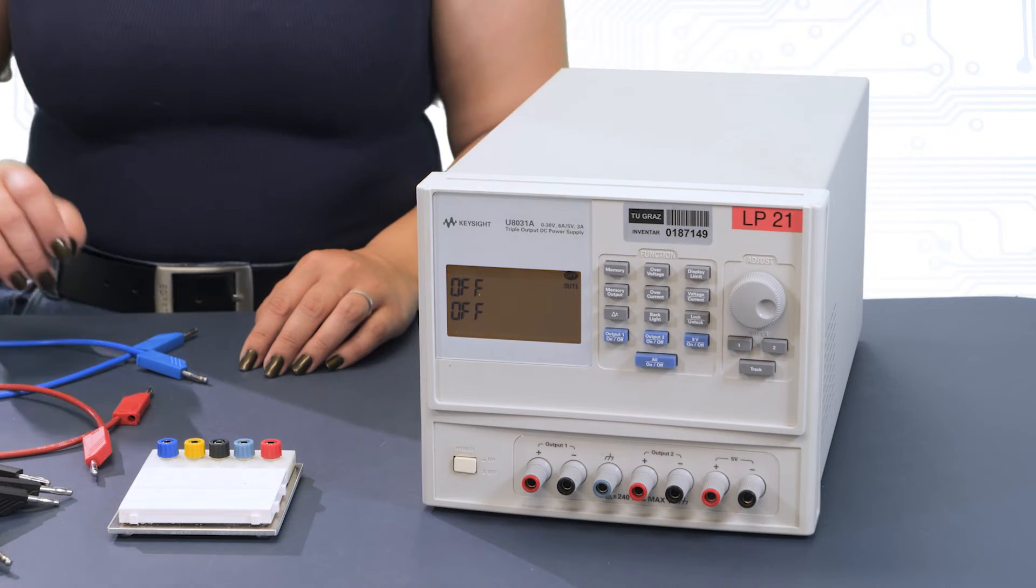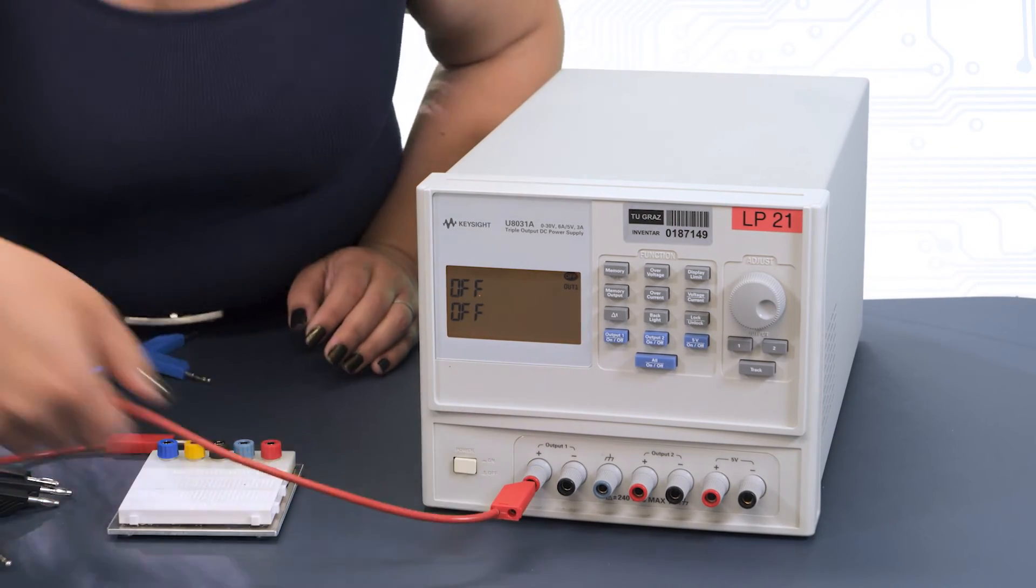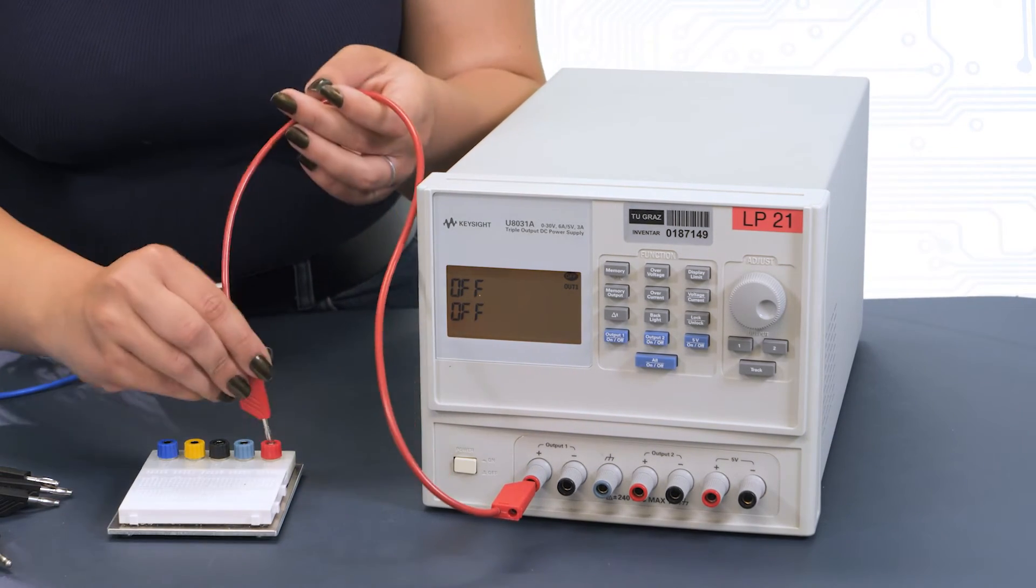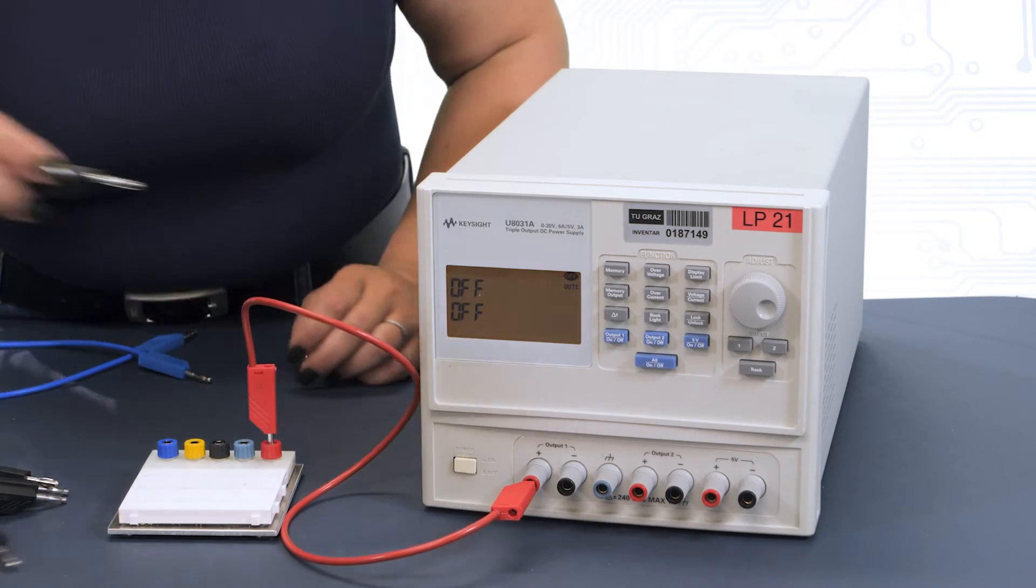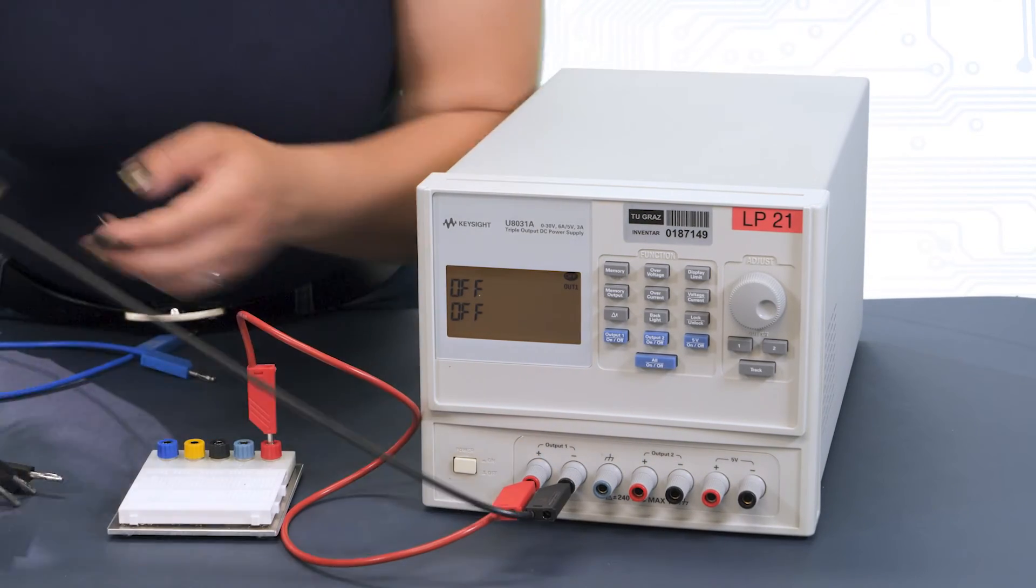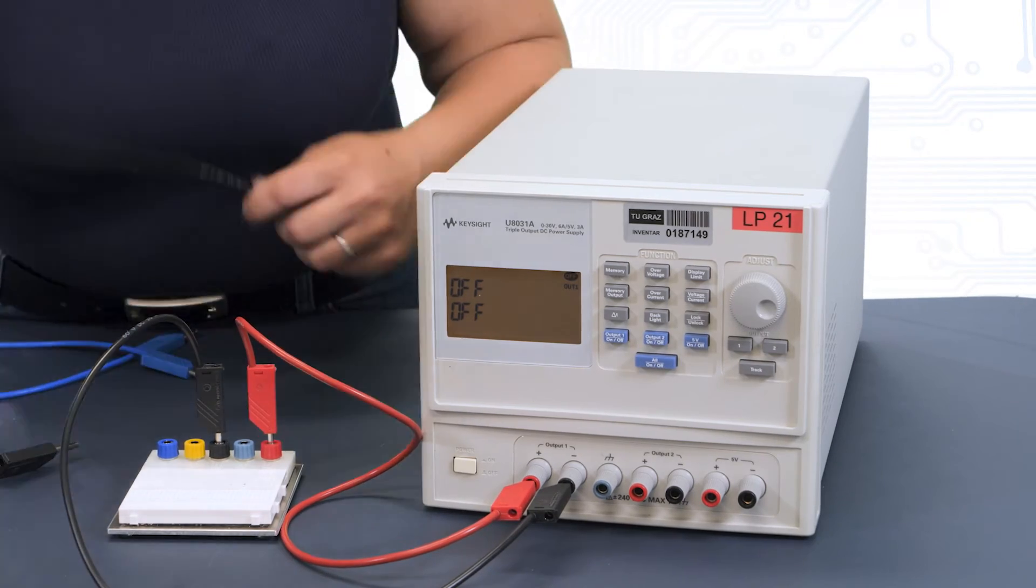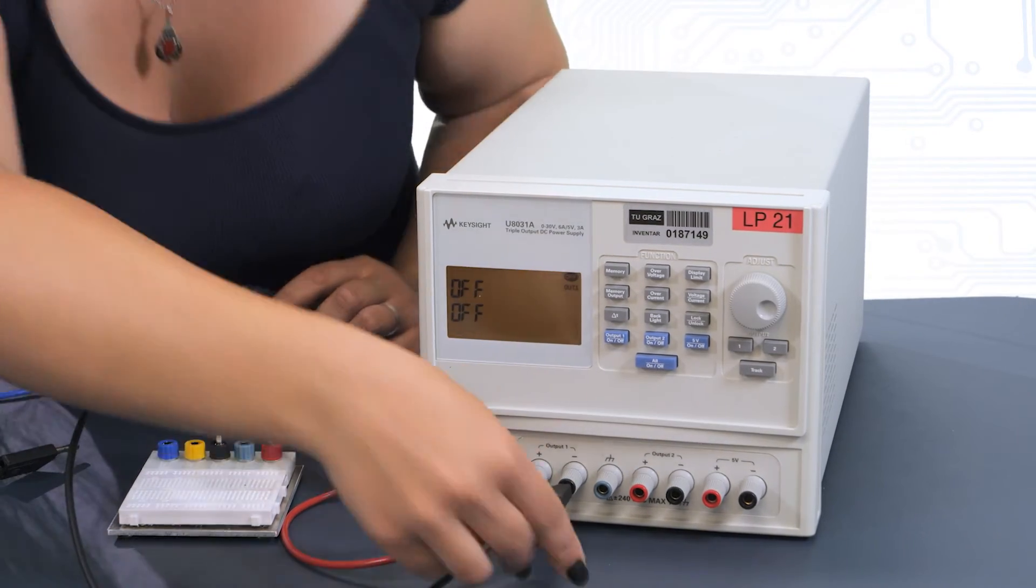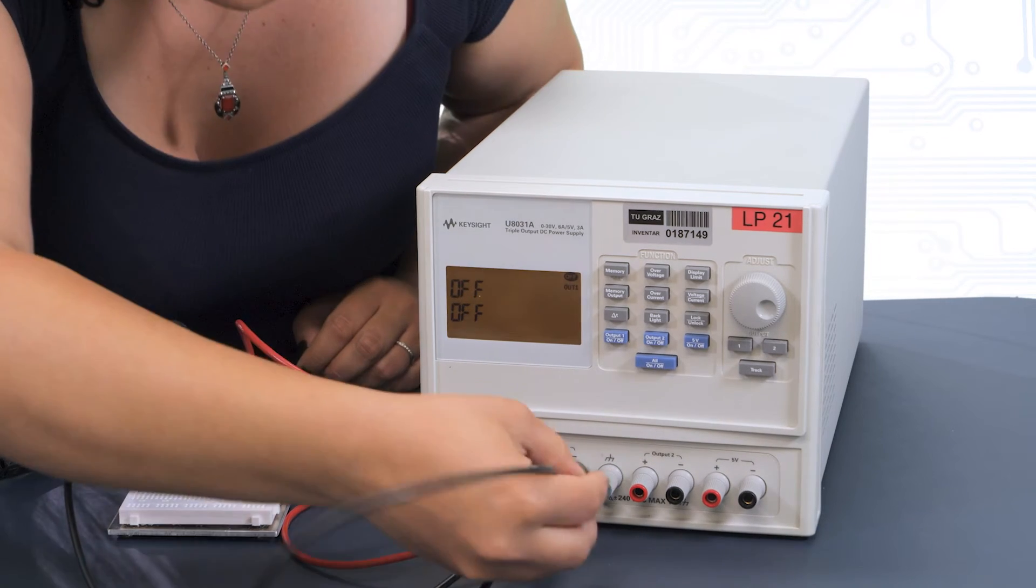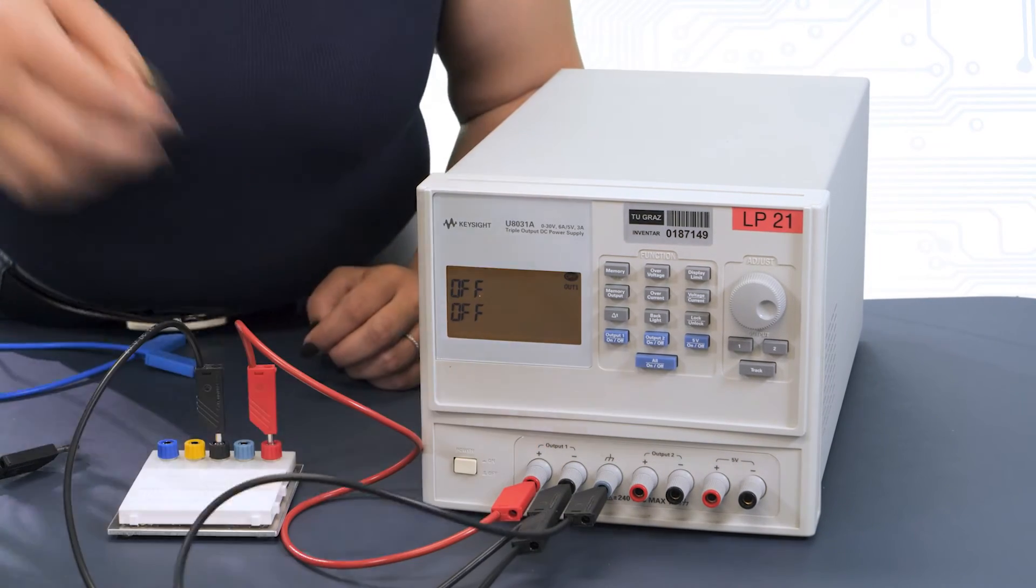One output is used to supply plus 12 volts, so the plus side is connected to the plus 12 volts connection of the circuit, and the minus side is connected to the reference connection of the circuit. In our case, the reference connection corresponds to the ground connection.